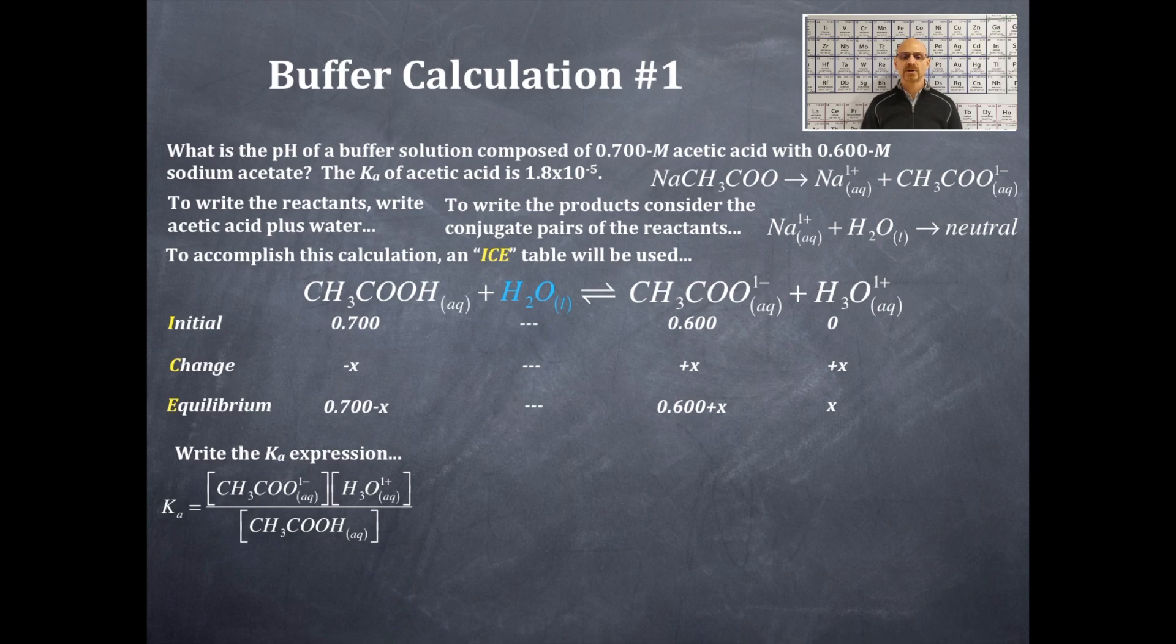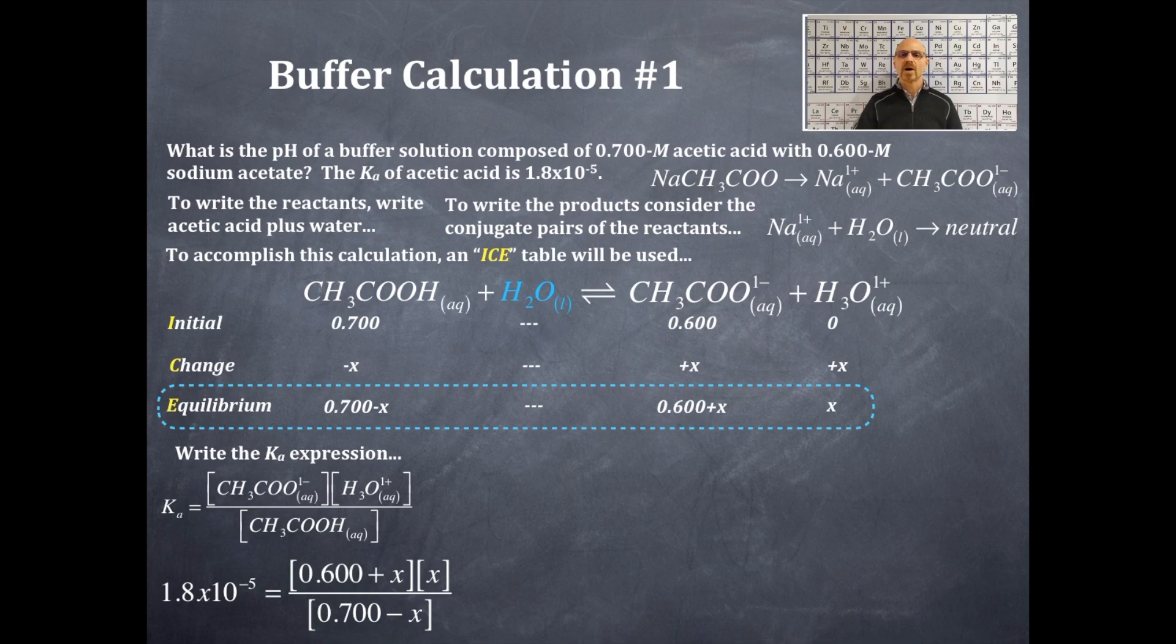Now what I'm going to do is I am going to plug in my equilibrium sets of data into this equation as well as the Ka that was given in the problem. Alright, so I got 1.8 times 10 to the negative 5, that's the Ka. That's on the left-hand side of the equals. On the right-hand side I got 0.600 plus x times x in the numerator, and in the denominator of that right-hand side I got 0.700 minus x.